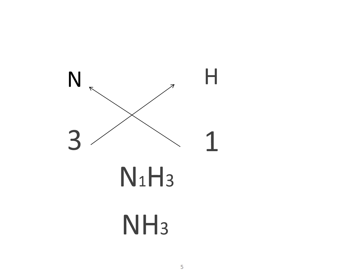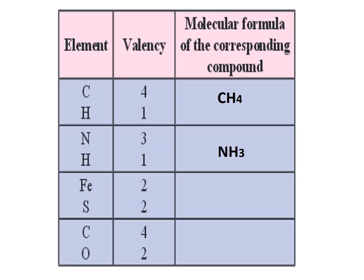We will write this in the table again. NH3 is the molecular formula of the compound formed from elements N and H. Now we look at the next example: Fe and S. We need to find out what will be the molecular formula of the compound that is formed from Fe and S.